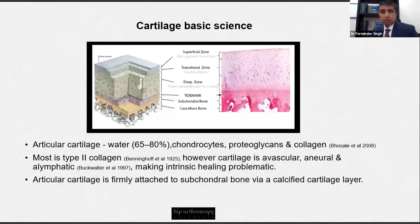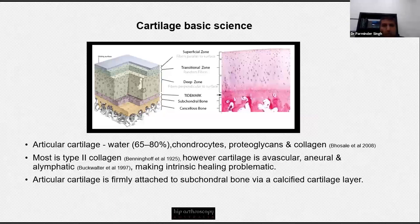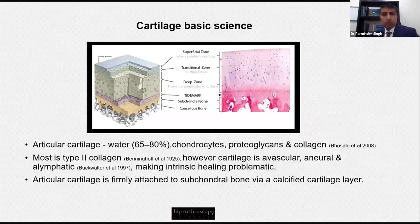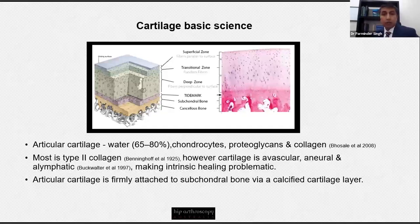Going back to basic science cartilage: we know articular cartilage is predominantly water — 65 to 80 percent — and within the cartilage are chondrocytes, proteoglycans, and collagen, predominantly type 2 collagen. However, articular cartilage has its own challenges of healing because it's a-neural, a-lymphatic, and avascular. We know that the articular cartilage is firmly attached to the subchondral bone by the calcified cartilage layer.